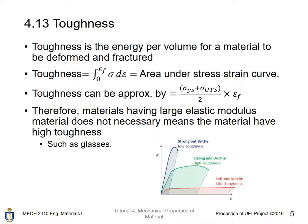Toughness is the energy per volume for a material to be deformed and fractured. Toughness is defined as the integral from zero to the strain at failure of the stress value d-strain, which is also the area under the stress-strain curve. Toughness can be approximated by (sigma_y plus the ultimate tensile strength) over 2, times the strain to failure — here the strain value at failure.